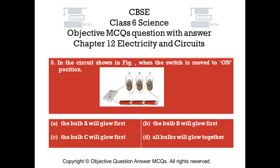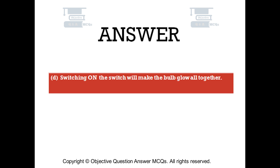Question number 5. In the circuit shown in the figure, when the switch is moved to the on position: Option A — the bulb A will glow first; Option B — the bulb B will glow first; Option C — the bulb C will glow first; Option D — all bulbs will glow together. The right answer is option D. Switching on the switch will make all the bulbs glow together.